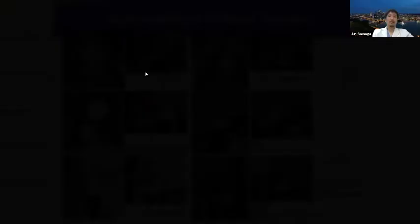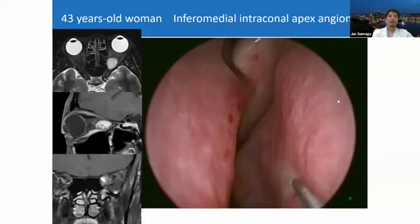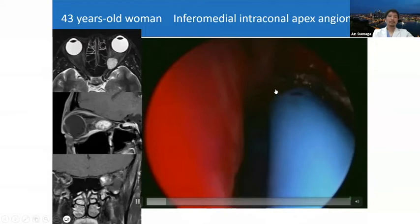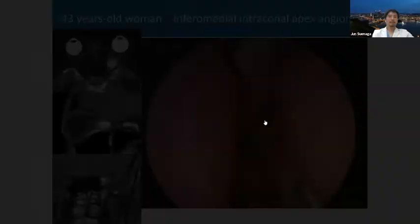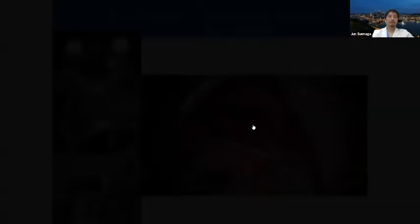Inferomedial orbital tumors include angioma, SFT, pseudotumor, traumatic, and vascular anomaly. This 43-year-old patient had an apex angioma. Unfortunately, I worsened visual function after surgery for this patient. Using endoscope observation and trans-antral approach to remove the tumor — incision to the gingiva, drilling the inferior orbital bone, and all the tumor was removed — but during surgery the VEP was diminished.